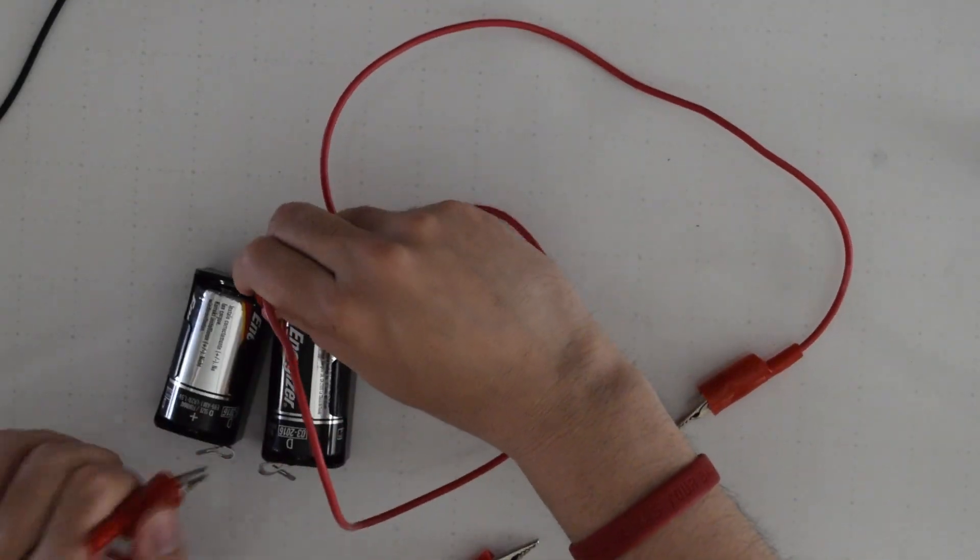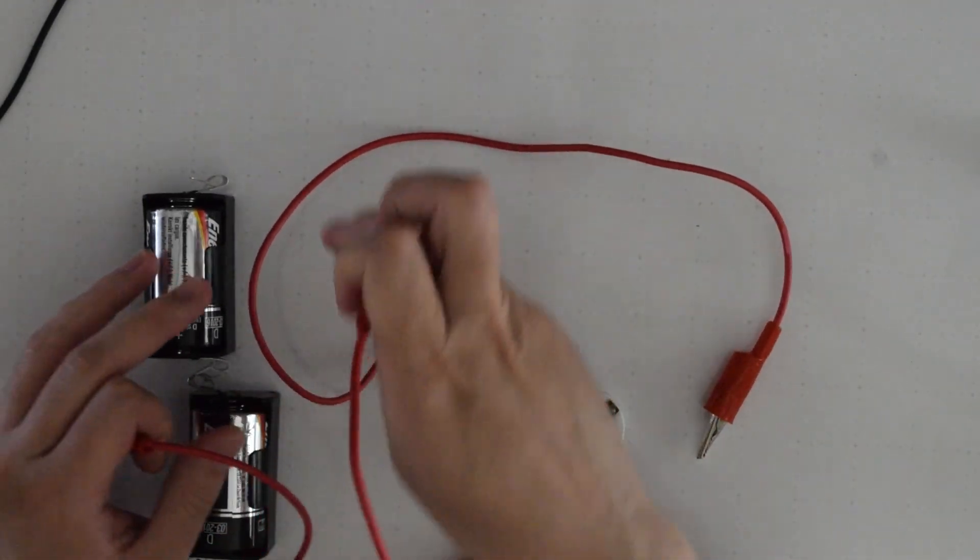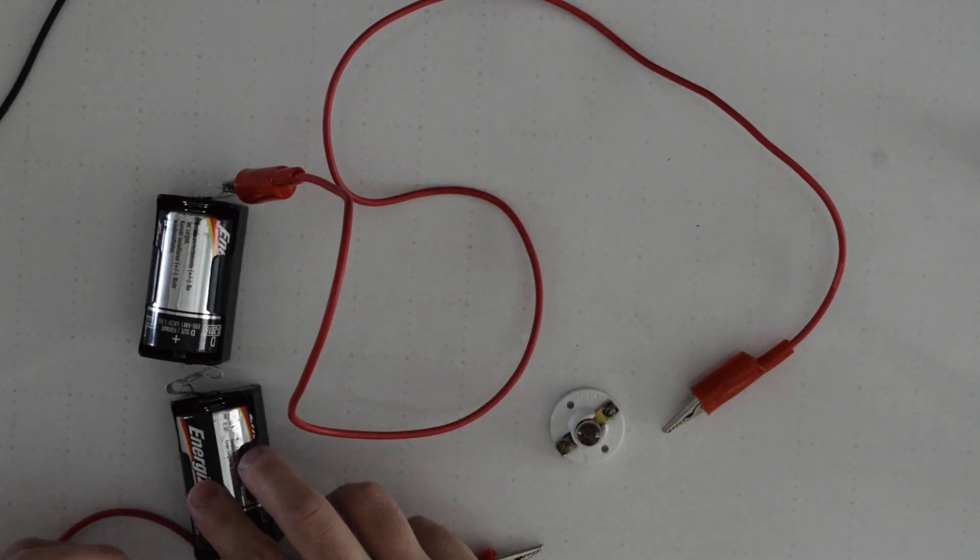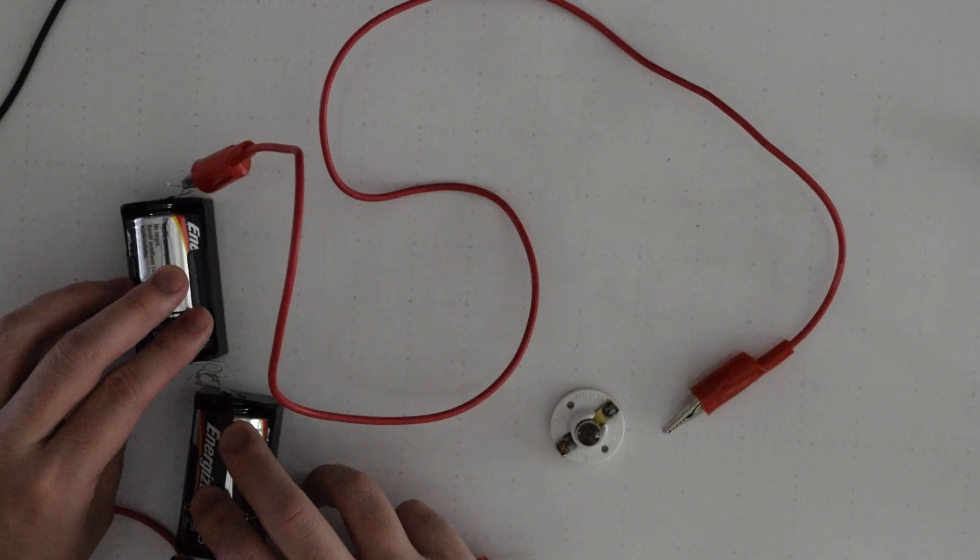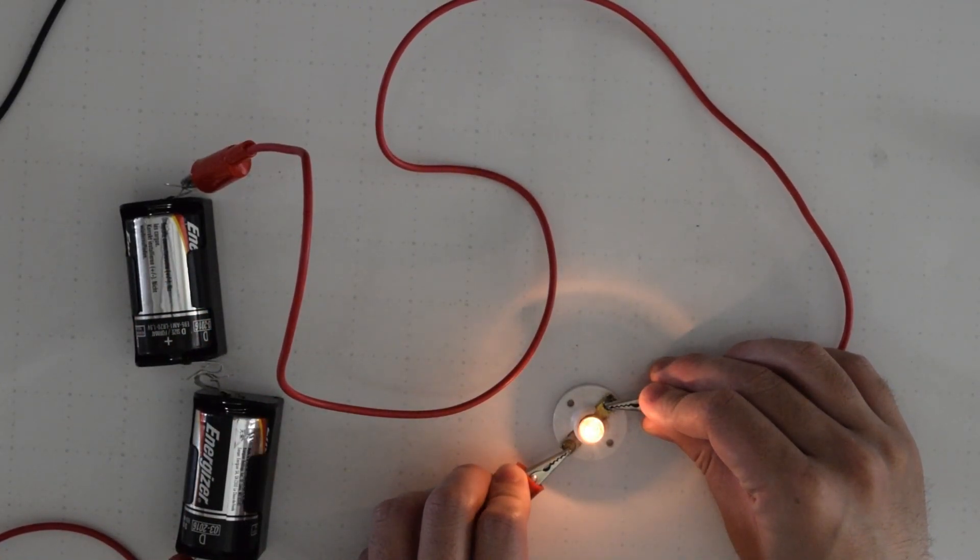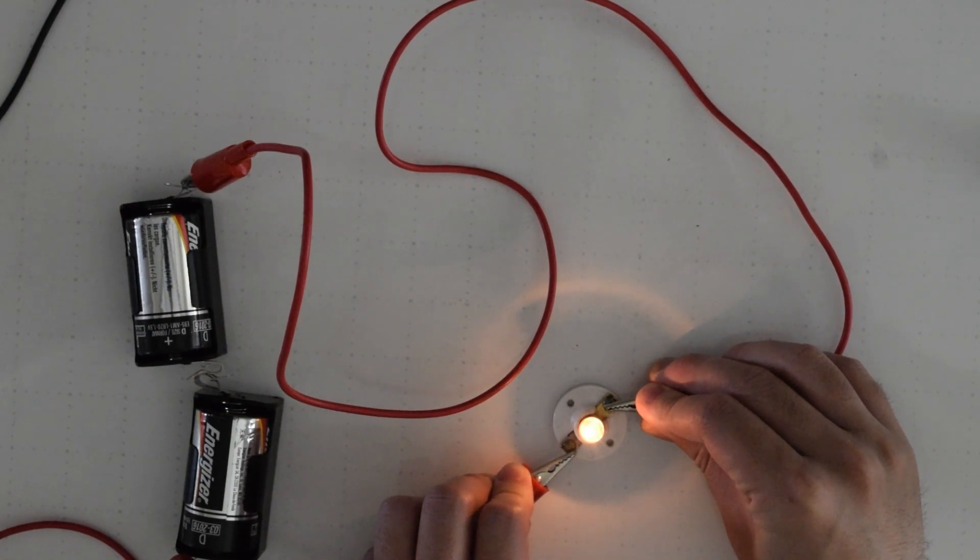When the batteries are in series like the previous example, the amount of time that the light bulb will stay active is the same as if it was just one battery. So in this case if one battery was going to have the light bulb last for one hour, the two batteries in series are going to have it last for an hour but it will be a much brighter bulb.